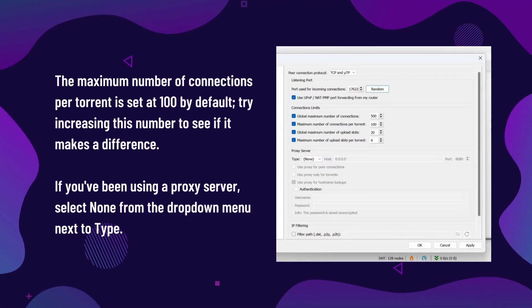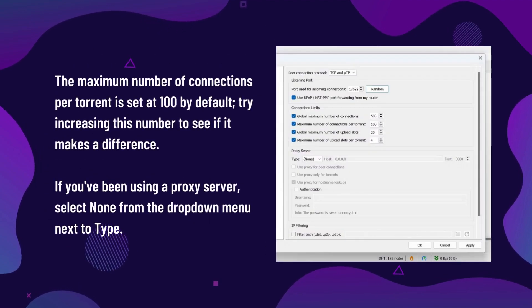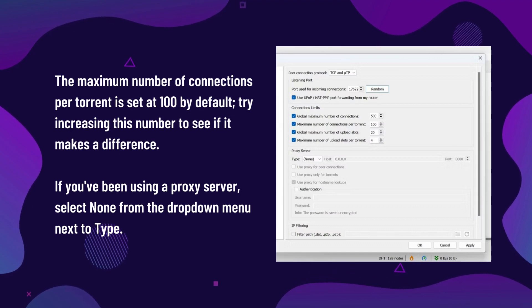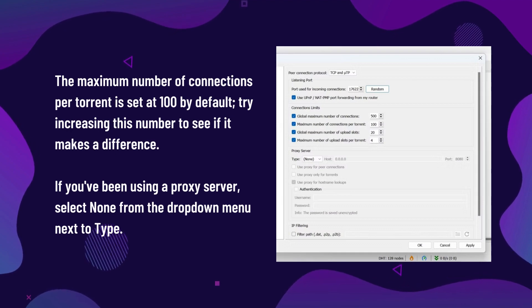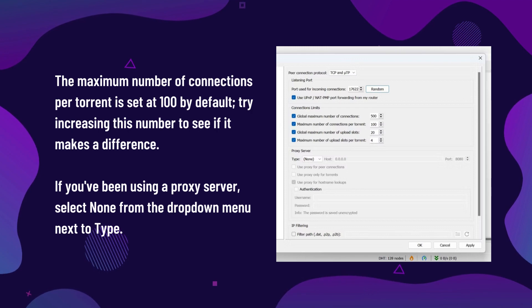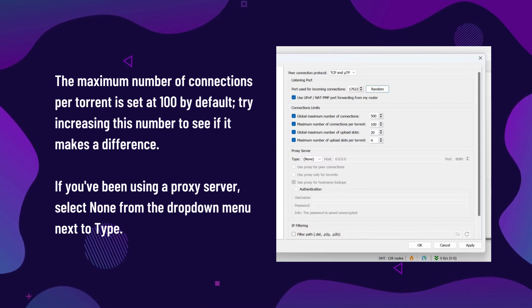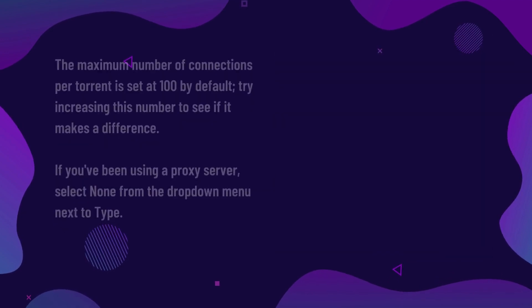The maximum number of connections per torrent is set at 100 by default — try increasing this number to see if it makes a difference. If you've been using a proxy server, select None from the drop-down menu next to Type.